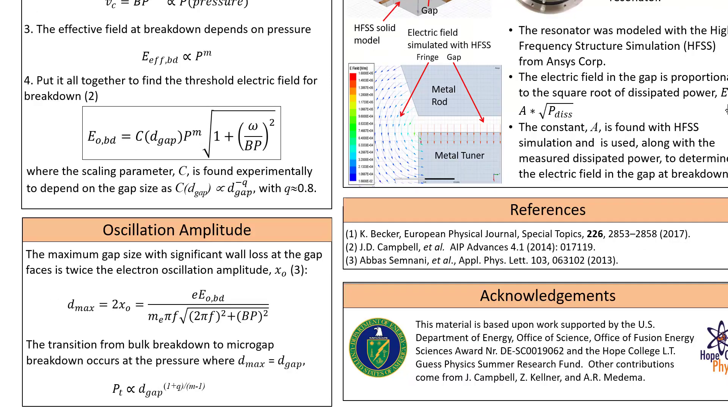The rest of the model concerns motion of electrons in the high-frequency electric field. Inside of a small gap space where you have metal walls, there is a maximum amplitude that electrons can have for their oscillation before they begin to be absorbed by the walls. That's the hypothesis we make, that the maximum size of a gap for loss to the walls is twice the oscillation amplitude.